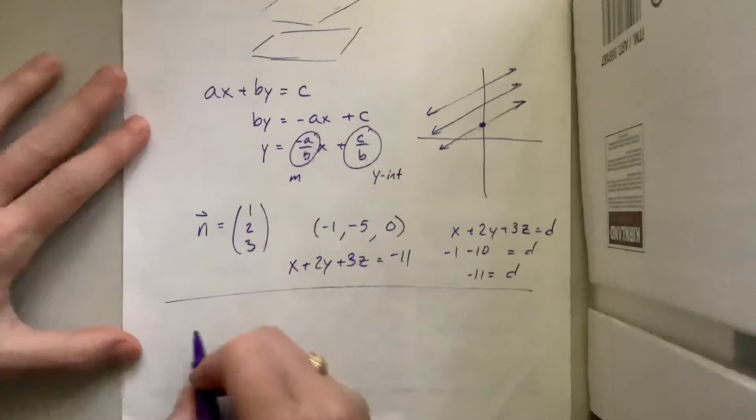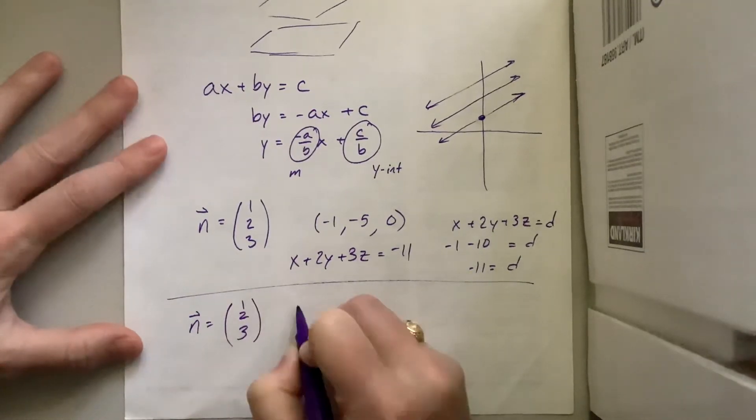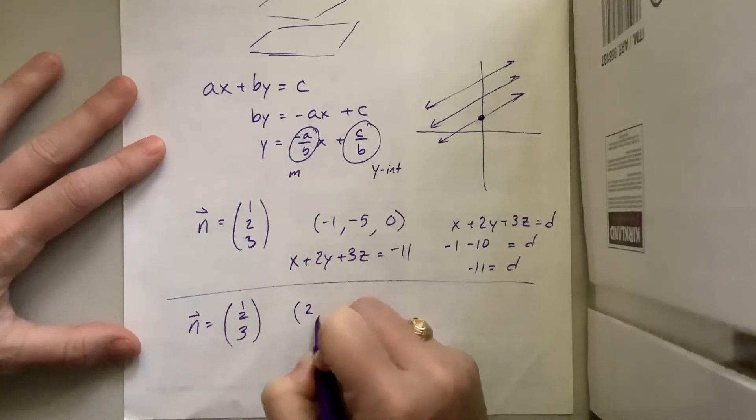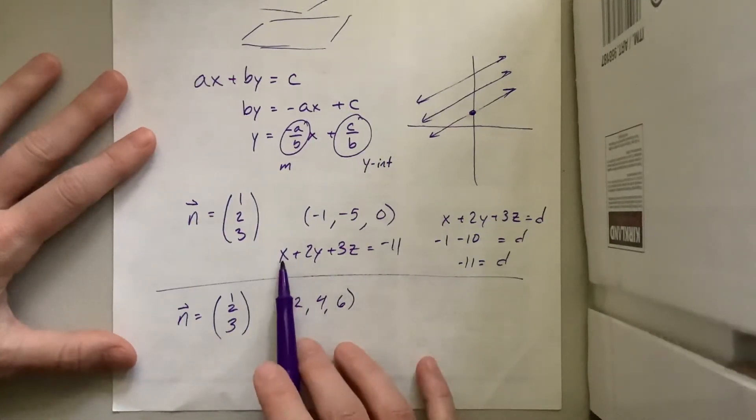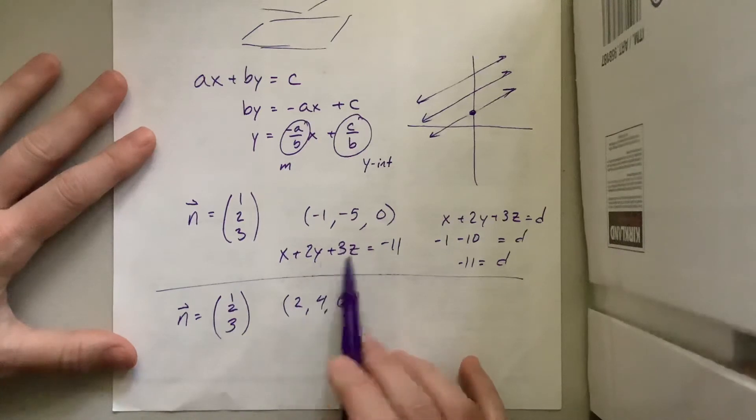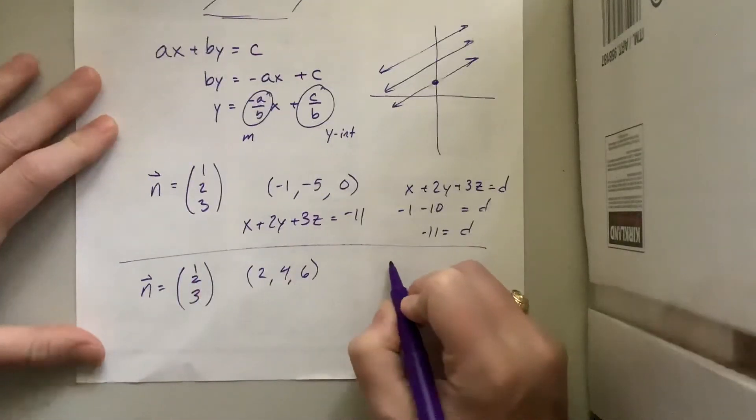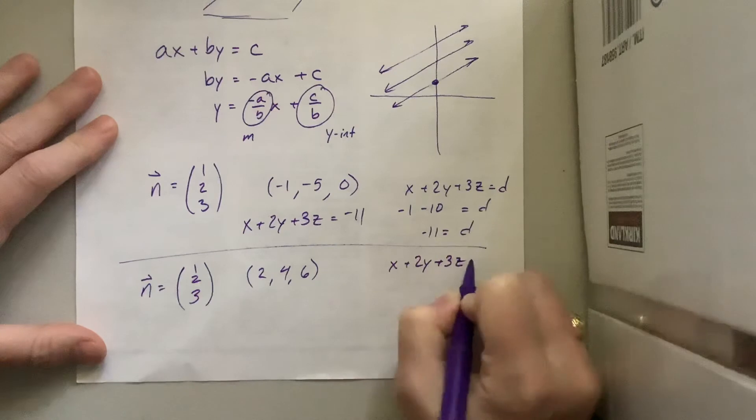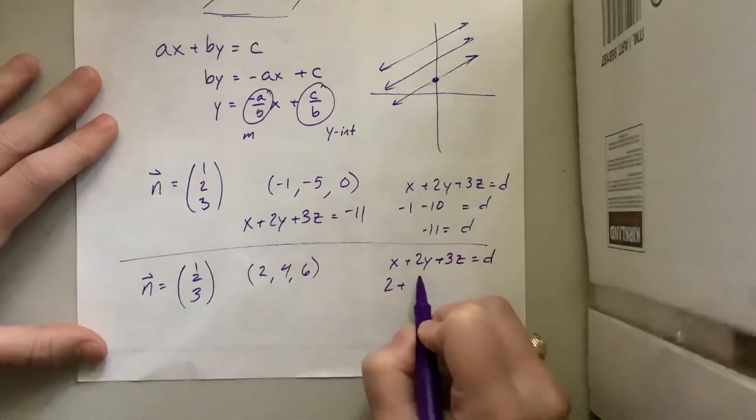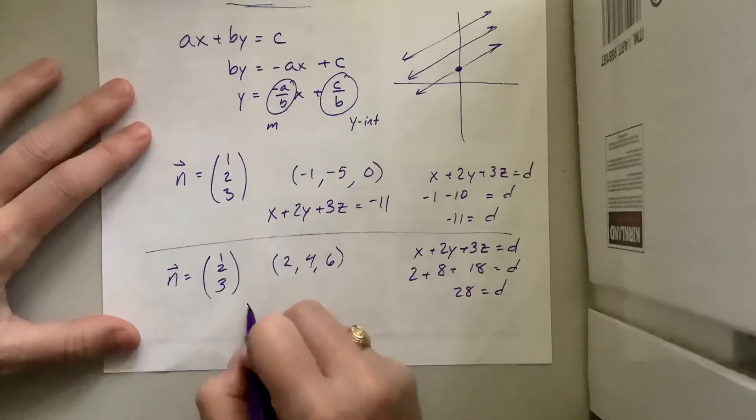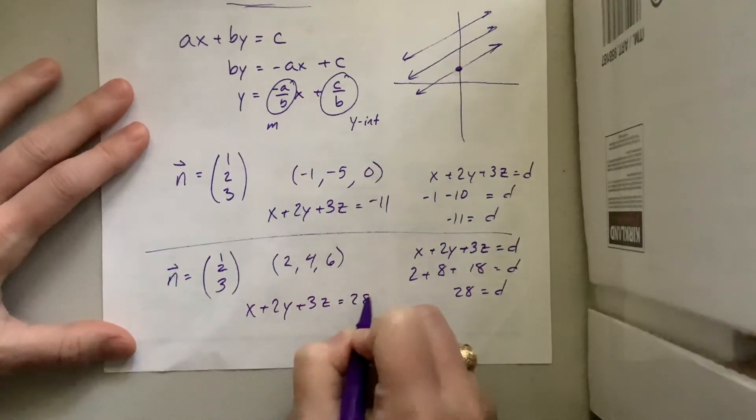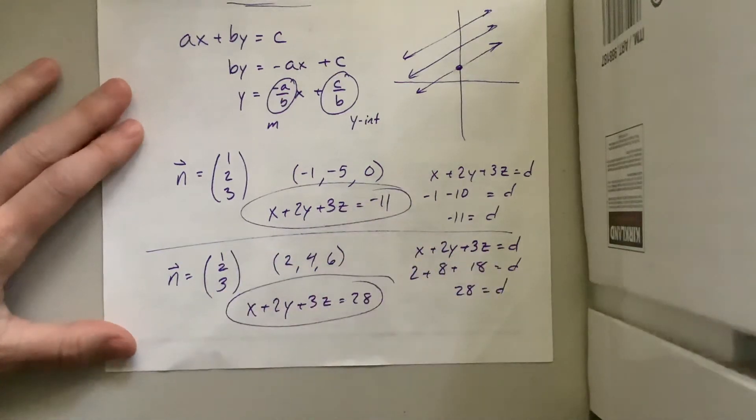Well, let's say I had the exact same normal vector, but now I pass through the point 2, 4, 6. It's a totally different point. Let's make sure it's not on this plane. If I plug in 2, that's 2, plug in 4, that's 8, plus 2 is 10. Plug in 6, that's 18, plus 10 is 28. So this point is not on that plane. Well, and sure enough, I just did the work that we need to do. X plus 2Y plus 3Z equals D. If I plug in 2 plus 2 times 4 is 8, plus 18, that's 10 plus 18, that's 28 is equal to D. So these two planes, X plus 2Y plus 3Z equals 28, these two planes are going to be parallel, but they don't pass through the same point.